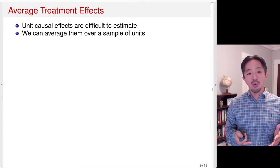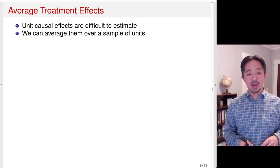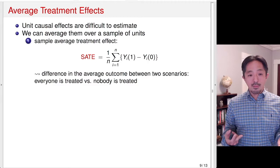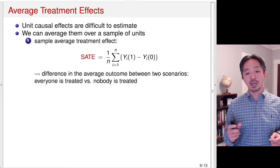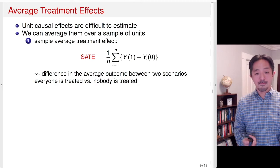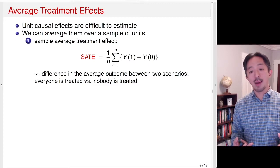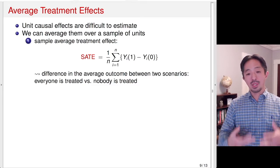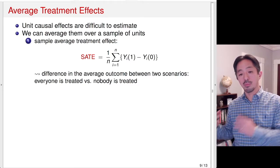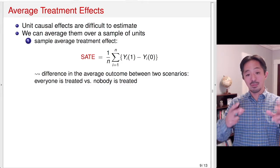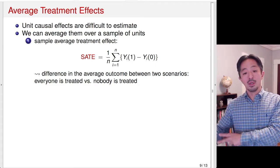What we can do is average over sample units and try to infer the average treatment effects. For example, we can look at the sample average treatment effect, which simply takes the average of unit causal effects over the n units in the study. One interpretation is: what would happen if everybody gets treated? What would be the average outcome if everybody gets treated versus nobody gets treated? So the mean outcome under treatment — the mean of y(1) — contrasted with the mean of y(0), the mean outcome when nobody is treated.